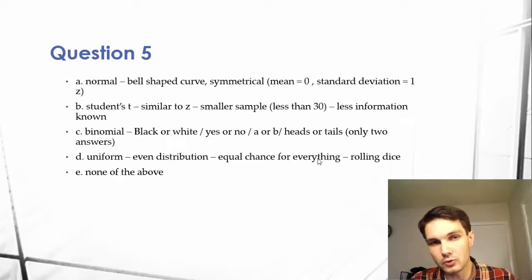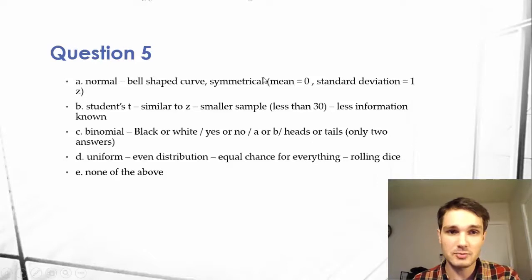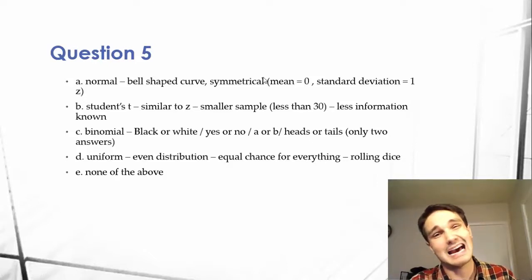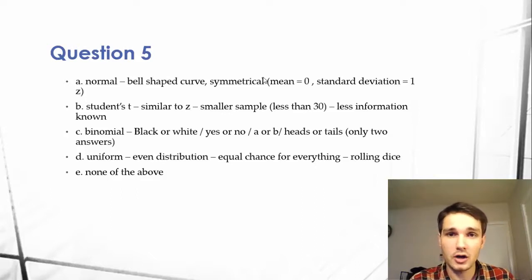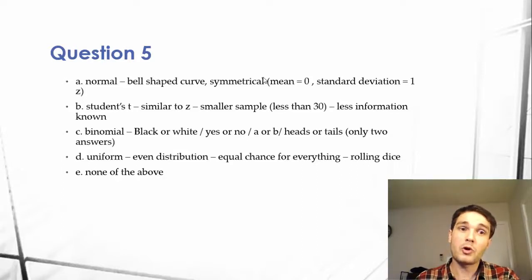That's different from the normal and t's distribution because a normal and t distribution can be used to figure out height or how much water came down in a rainfall or how large a snowpack was last year in a certain area. Those are more quantitative, not just yes or no.